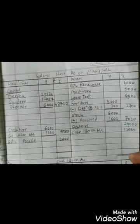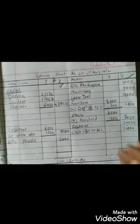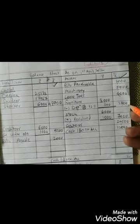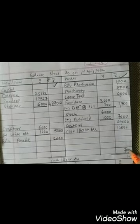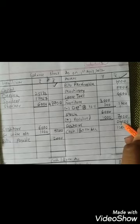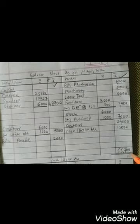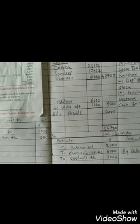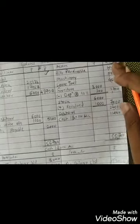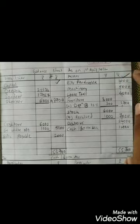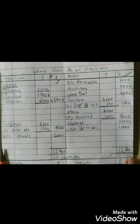Now close the asset outer column and liability outer column by totaling both sides. Adding up the liability side gives the total, and the asset side matches — both sides are equal, confirming the balance sheet is correct. The problem is complete. Step by step, you can post and close all accounts. If you don't understand anything, you can ask.